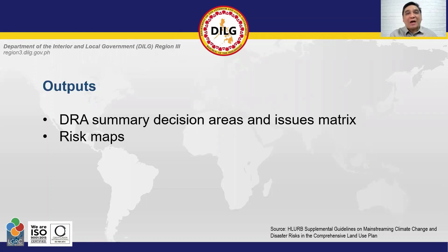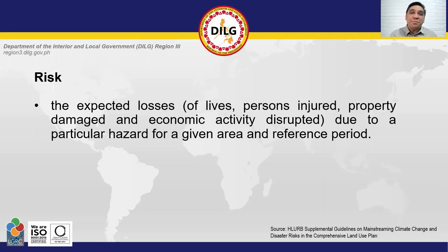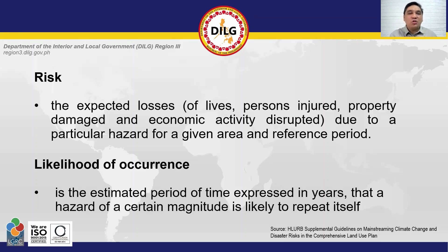Two major outputs are expected in this step. First is the Disaster Risk Assessment Summary Decision Areas and Issues Matrix, and the second are the Risk Maps. To put it simply, risk is the expected losses — such as lives, persons injured, property damaged, and economic activity disrupted — due to a particular hazard for a given area and reference period. Likelihood of occurrence is the estimated period of time expressed in years that a hazard of a certain magnitude is likely to repeat itself.